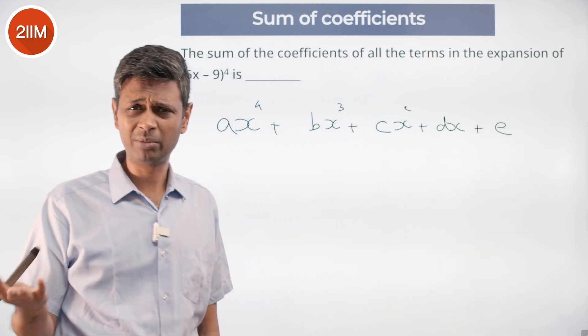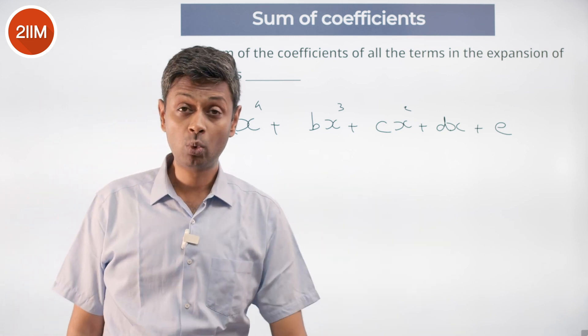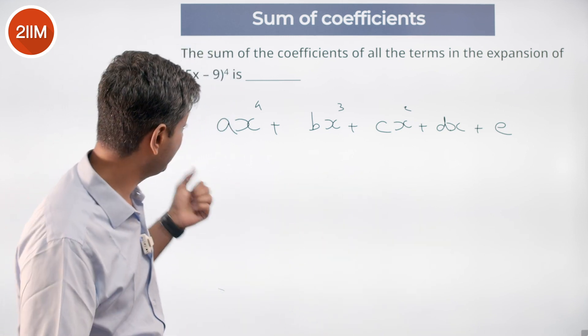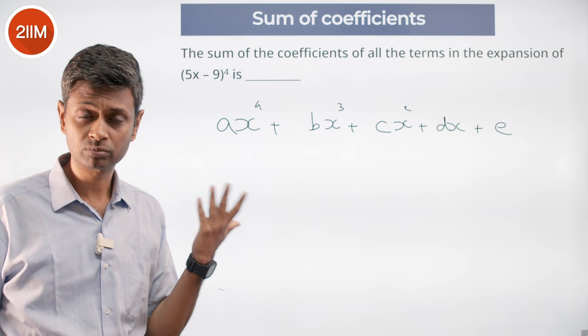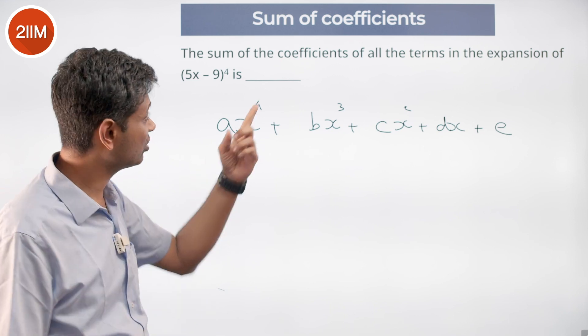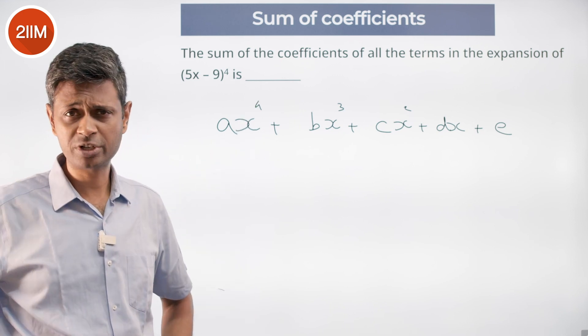I do not care what a, b, c, d, e are — this is how it will expand. What do I need to find? I need to find a plus b plus c plus d plus e. That is what I want to find: the sum of all coefficients in its expansion.